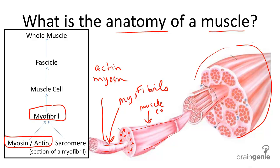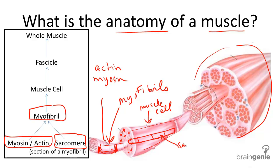Before we go further, we have one definition to go over — it's a sarcomere. A sarcomere is simply a section of actin and myosin filaments, and there are many sections of these. If we took one actin and myosin filament, called a myofibril, and took sections of it, we would have many sarcomeres. These sarcomeres are responsible for muscle contraction.